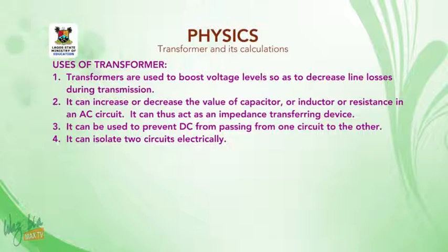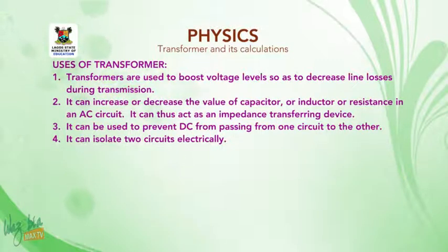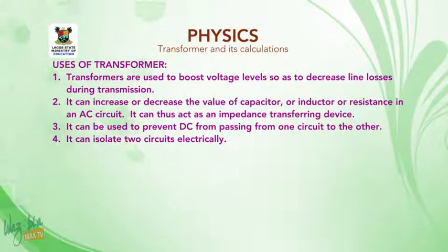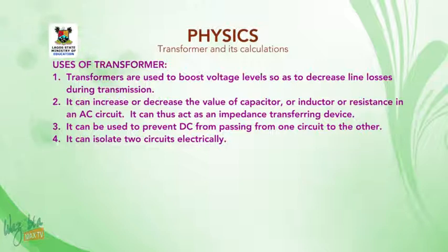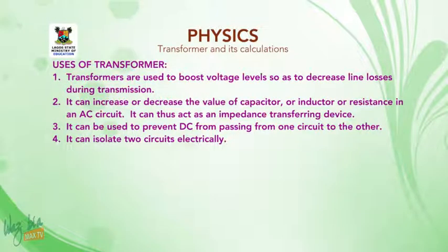Uses of transformer. One, transformers are used to boost voltage levels so as to decrease line losses during transmission. Two, it can increase or decrease the value of capacitor, inductor, or resistance in an AC circuit, and can thus act as an impedance transferring device. Three, it can be used to prevent DC from passing from one circuit to the other. Four, it can isolate two circuits electrically.